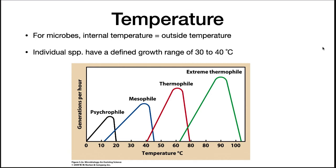One of the most important physical parameters that constrain bacterial growth is temperature. For microbes, the internal temperature is equal to the outside temperature. Each species will have a defined growth range of 30 to 40 degrees centigrade. Their temperature range classifies the microbes. Psychrophiles will grow from 0 to 20 degrees centigrade, mesophiles from about 12 to 45 degrees centigrade, thermophiles from about 40 to 80 degrees centigrade, and extreme thermophiles grow from about 60 to 115 degrees centigrade. Growing at or above the boiling point of water in the deep ocean is a pretty amazing feat, and scientists are very interested in how this works. The question they're really trying to answer is what limits a microbe's ability to grow at low and high temperatures?